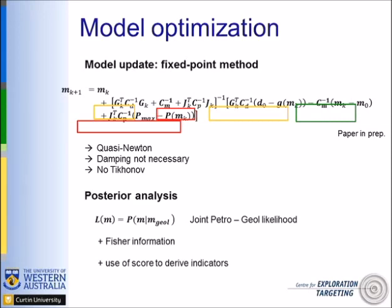The model is updated iteratively so that each iteration you go closer to the final solution. This uses a quasi-Newton method for minimizing the cost function. There is no damping and no Tikhonov regularization, as that would add artificial sources of information — we want to capture everything from the different geosciences. One term relates to geophysics, one to the update from geology, and one is the petrophysical constraint mixing geology and geophysics. After inversion, results are analyzed a posteriori to quantify convergence.